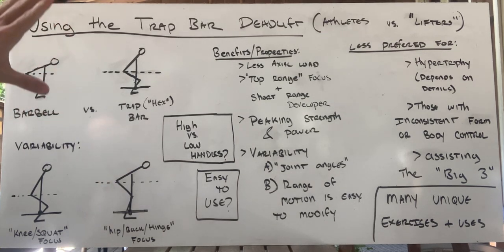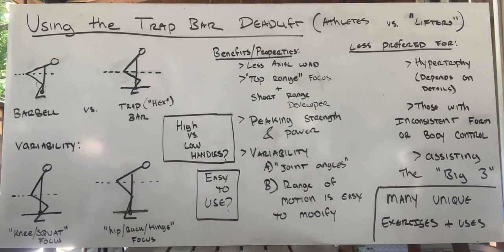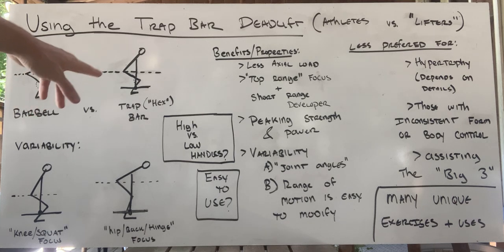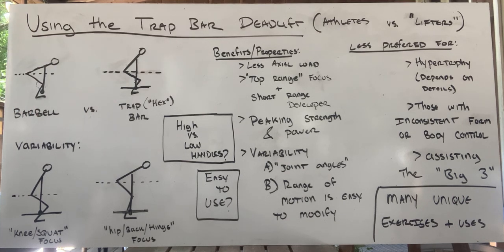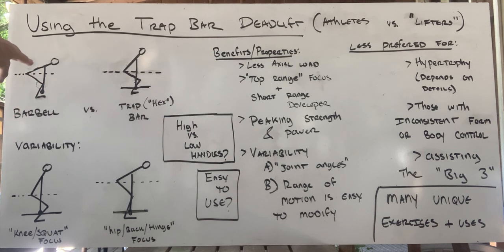We're going to specifically cover the trap bar deadlift today. What makes it different from a barbell deadlift? It's really the mechanics that make it unique. With a barbell deadlift, it's a straight bar — you have to keep that bar in front of you. It needs to be in front of your shins, in front of your knees, in front of your hips the entire movement. This places some constraints on the movement, which isn't necessarily a bad thing.